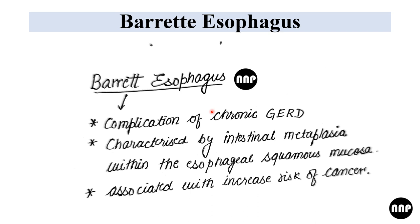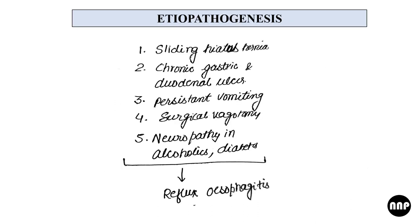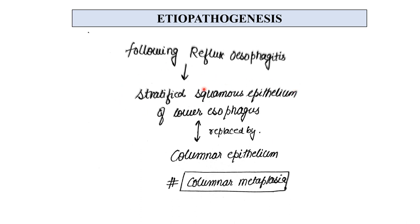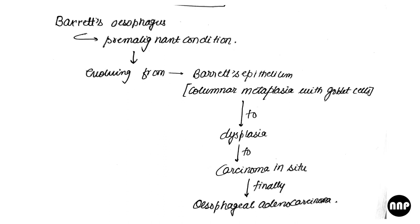The etiopathogenesis of Barrett's Esophagus includes causes like sliding hiatus hernia, chronic gastritis, duodenal ulcer, persistent vomiting, surgical vagotomy, and neuropathy in alcoholics and diabetes. These all cause reflux esophagitis, following which the stratified squamous epithelium of the lower esophagus gets replaced by columnar epithelium as a protective mechanism — known as columnar metaplasia. Barrett's Esophagus is a premalignant condition that evolves sequentially from Barrett's epithelium to dysplasia to carcinoma in situ and finally esophageal adenocarcinoma.